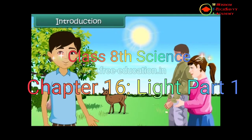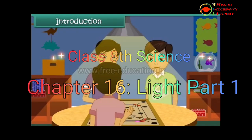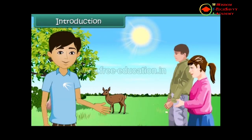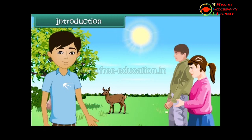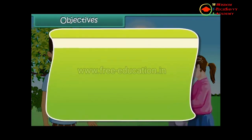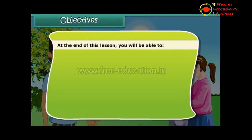The beautiful world around us is made visible to us by the effect of light. In the darkness we cannot see anything around us. Light is an important aspect of our life. In this lesson we will study about light, its properties and its characteristics.